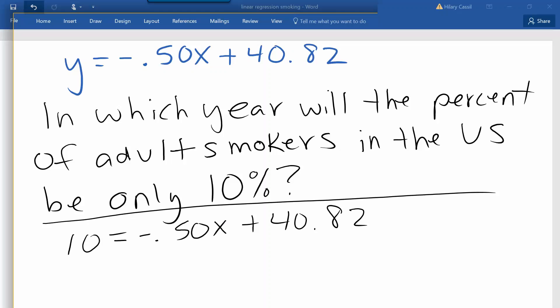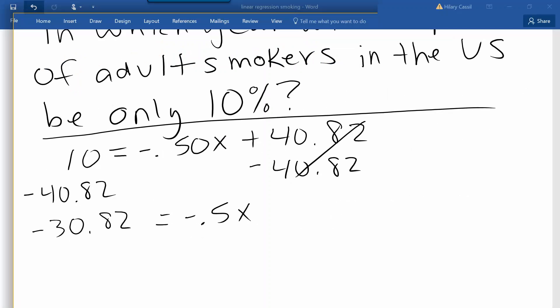So we'll go ahead and start by subtracting 40.82 from both sides, and lastly we'll go ahead and divide both sides by negative 0.5 to isolate the x.